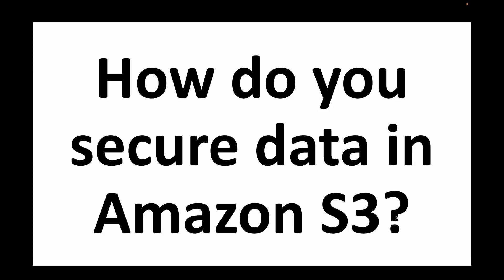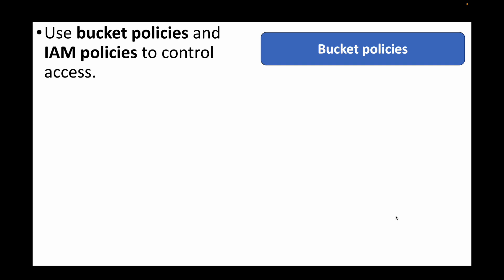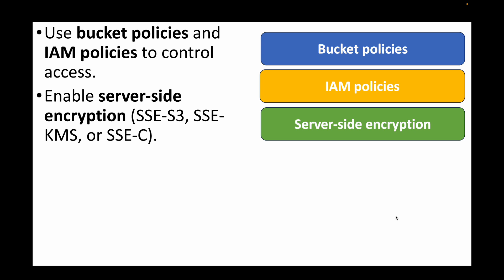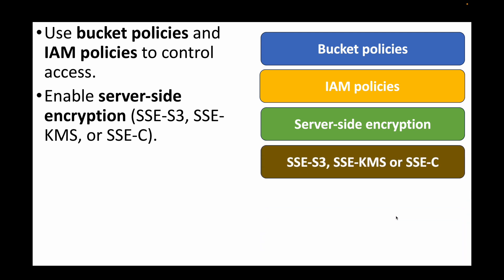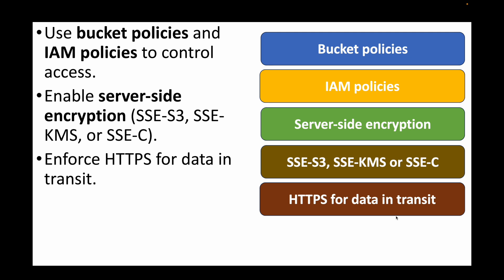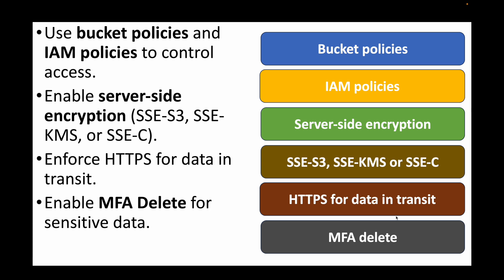The next question is: how do you secure data in Amazon S3? We can make use of bucket policies and IAM policies to control who can access S3 buckets, who can access objects inside the bucket, and what actions they can take. We can also enable server-side encryption using S3-provided keys or KMS-provided keys. We can enforce HTTPS for data in transit, and we can also enable MFA Delete for any sensitive data, providing an additional layer of security that requires MFA to delete that data.